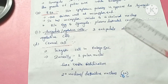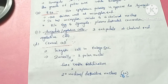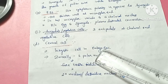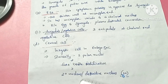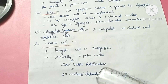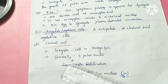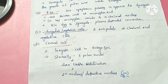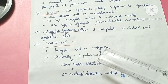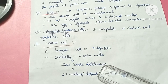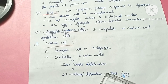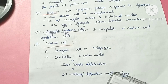Next is the central cell. The central cell is the largest cell in the embryo sac. Initially it contains two polar nuclei, but before fertilization these two nuclei fuse together to form the secondary nucleus, also called the definitive nucleus, which is in diploid condition. This concludes the organization of the embryo sac.